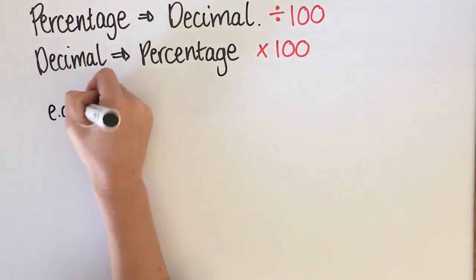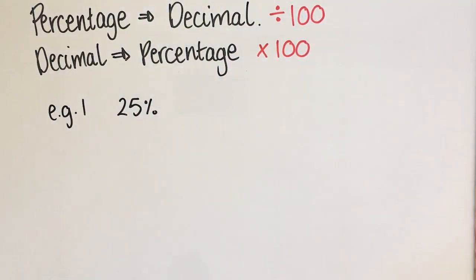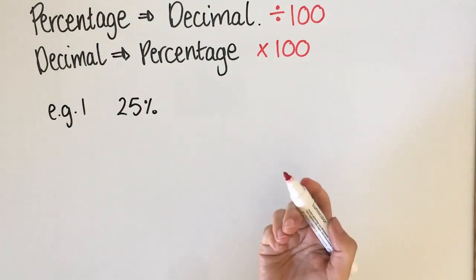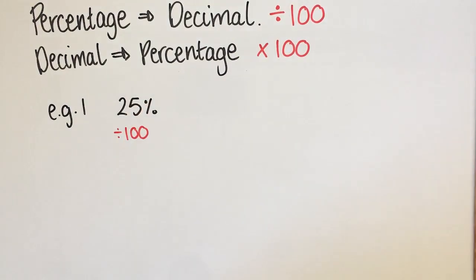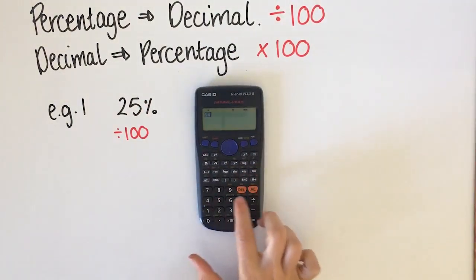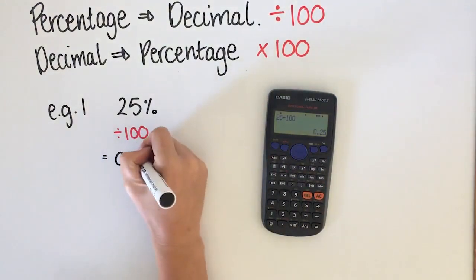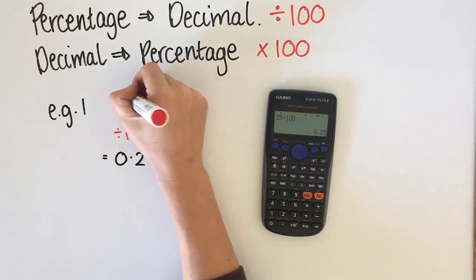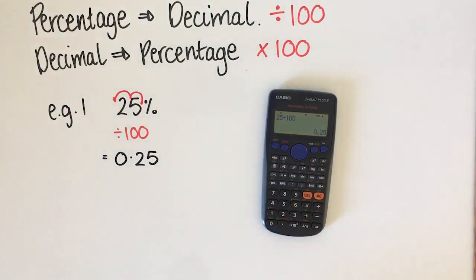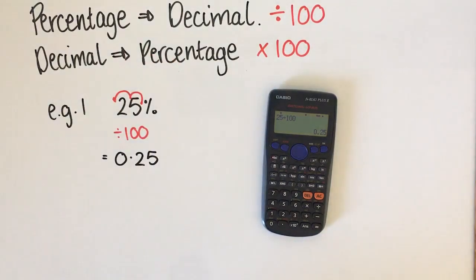Our first example is going from a percentage to a decimal. Starting with 25%, I need to divide by 100. On the calculator, 25 divided by 100 gives 0.25. What's happened is I've moved the decimal point two places — that's the equivalent of dividing by 100.